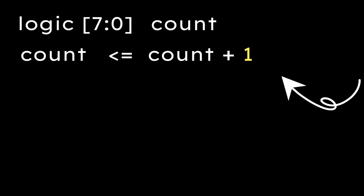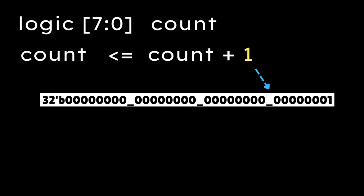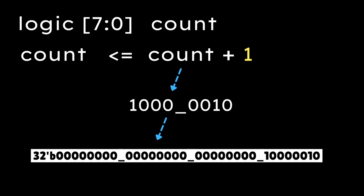Now, let's take the same example with 1. Here, 1 is 32 bit wide. So, the simulator will expand the count variable from 8 bits to 32 bits and then perform the addition.